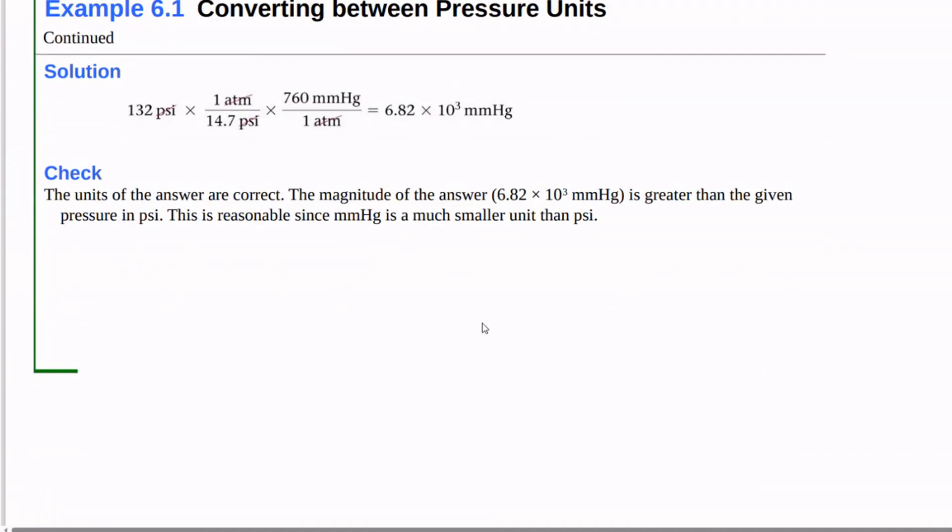So the way to solve this problem is to start with 132 PSI. We know that 14.7 PSI is one atmosphere. 760 millimeters of mercury is one atmosphere. So now atmospheres cancels.